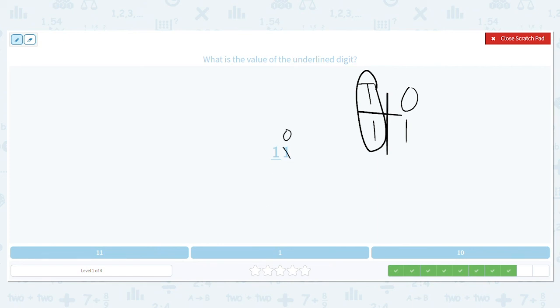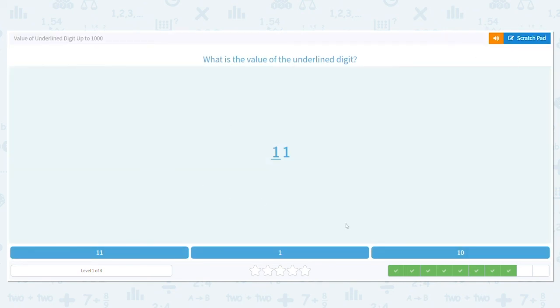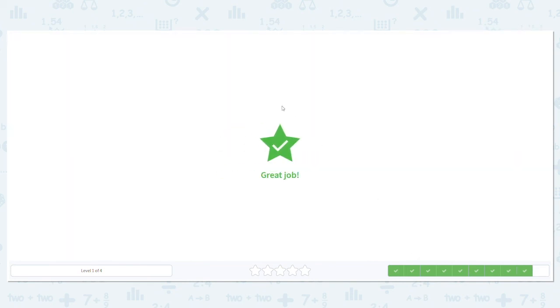So you can either do it this way or this way where you cross out everything after the underlined digit and make them zeros. Either way, your answer is ten.